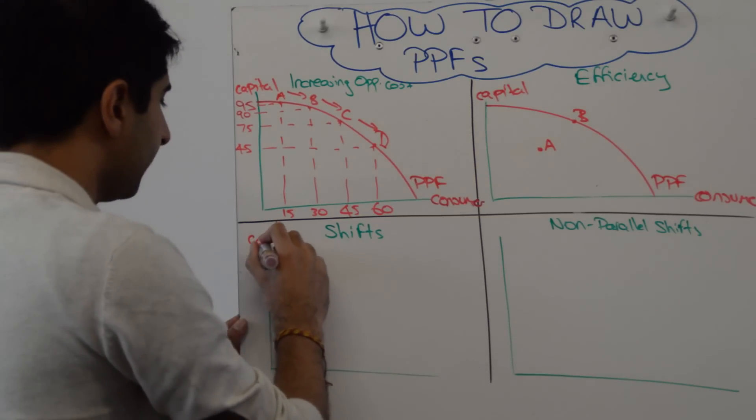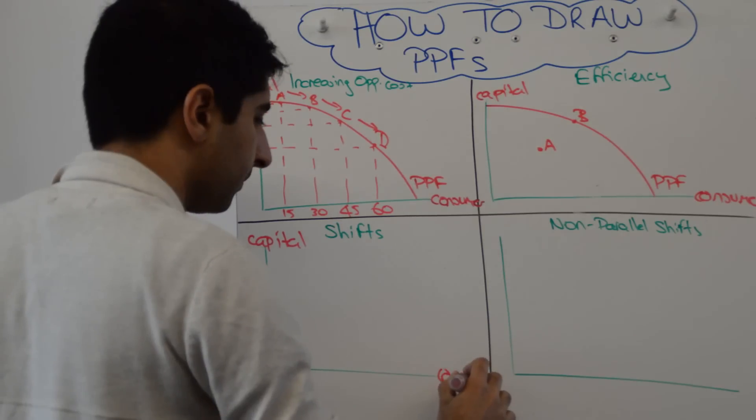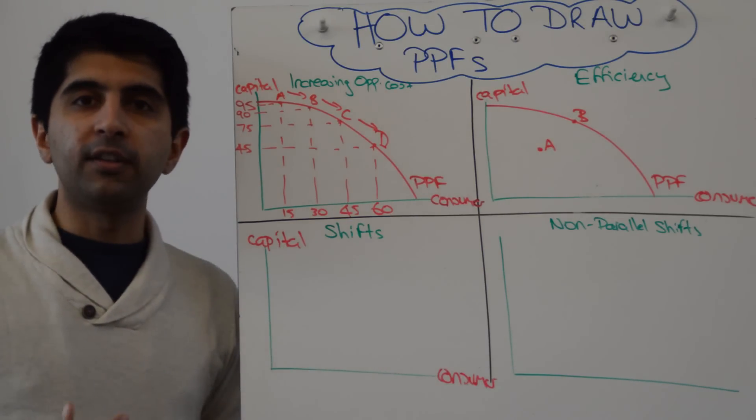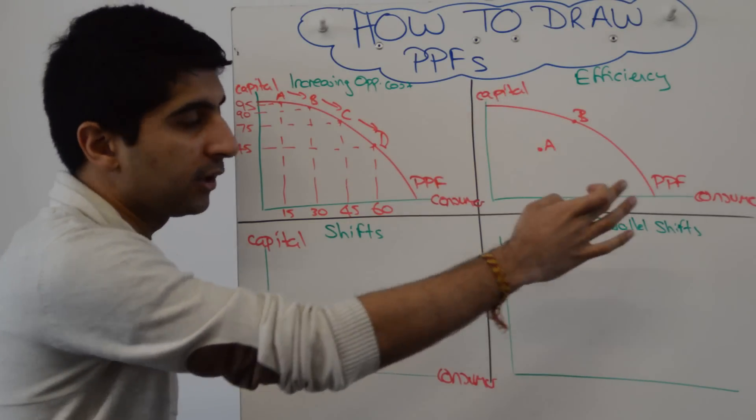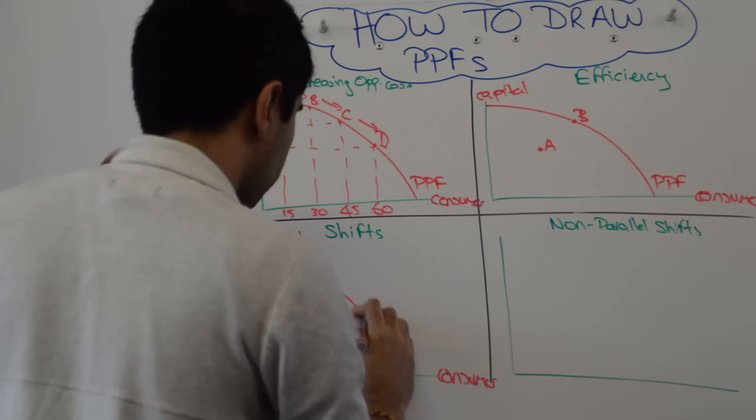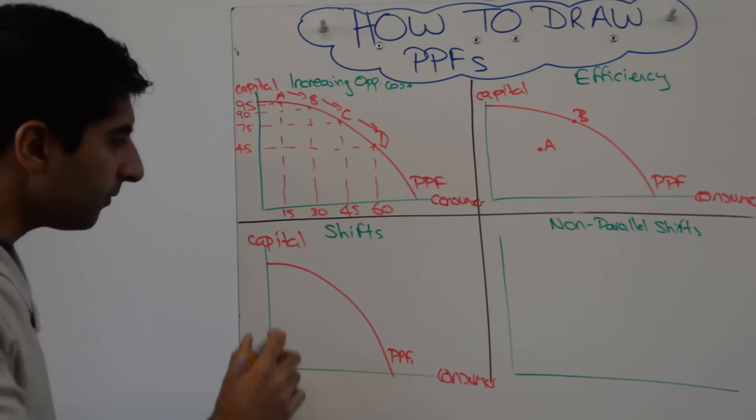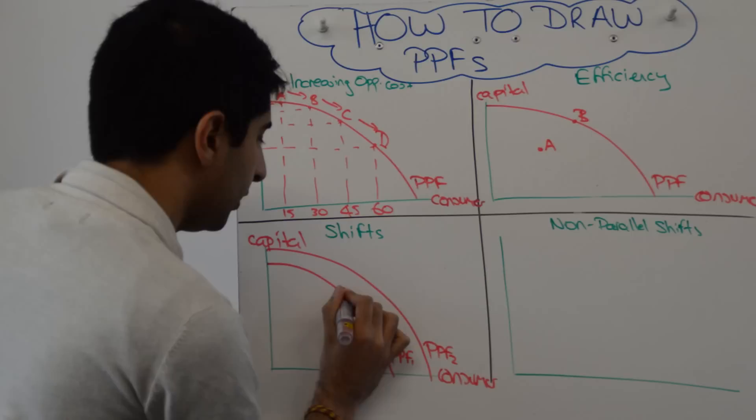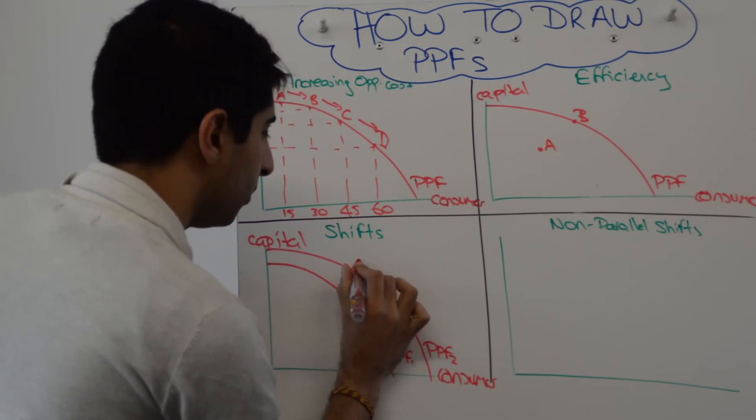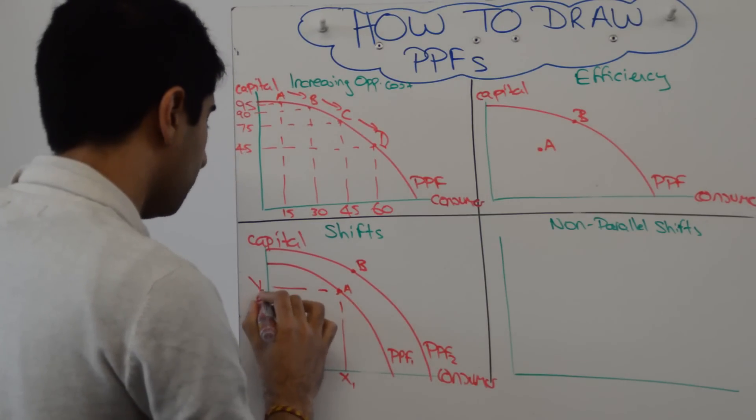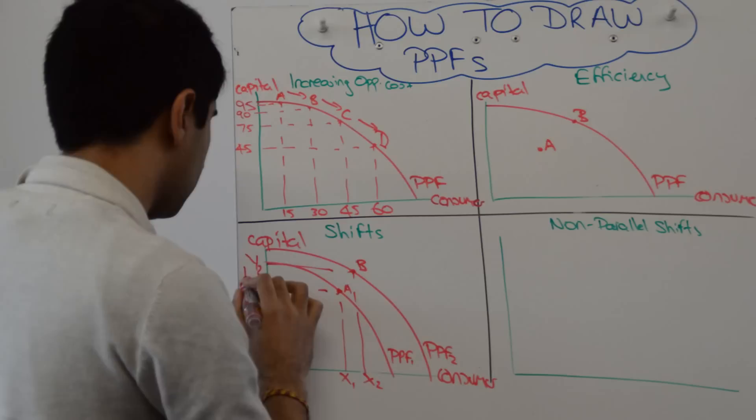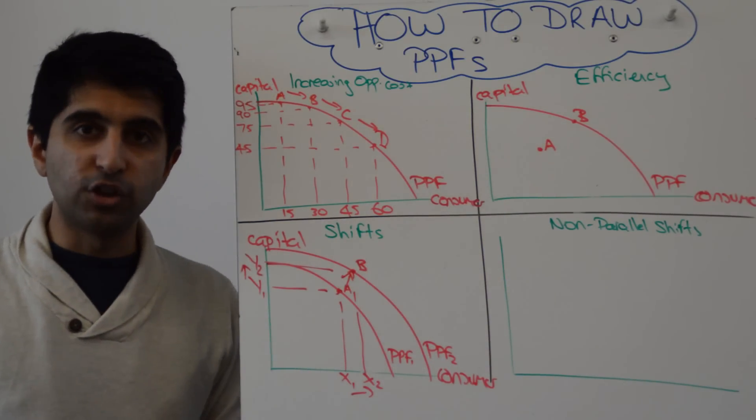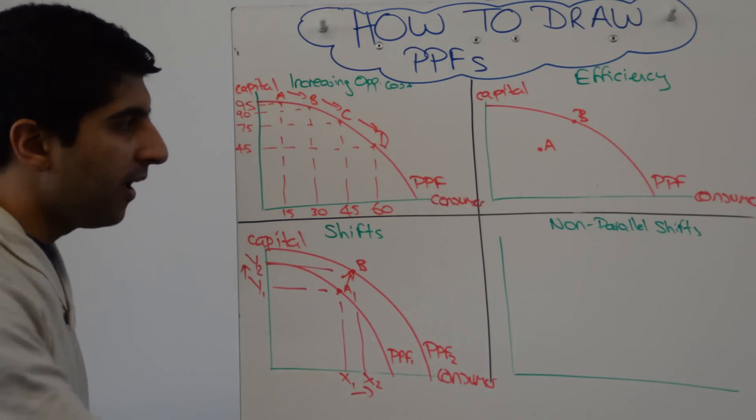We can also show shifts of the PPF. Let's label capital and consumer. If you need to show that the quantity and the quality of factors of production in the economy has increased, and you want to show how the PPF will shift outwards, increasing the possibilities of producing both capital and consumer goods in greater quantity than before, the way to do it is draw a concave PPF like this - PPF 1. Simply shift it out to PPF 2. What you might want to show at the same time is how previously you were at point A as an economy, and now you're able to move to point B. In doing so, we can produce more of both consumer goods and capital goods. A little shift like that. If you want to draw a little arrow, you can do that.